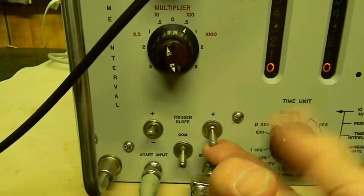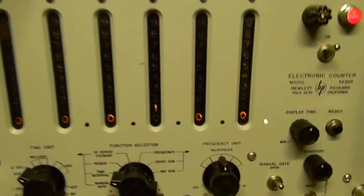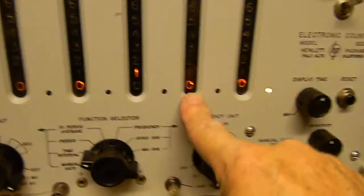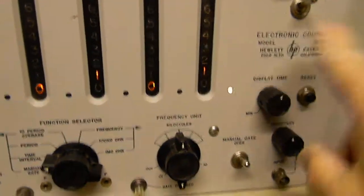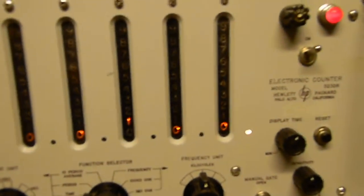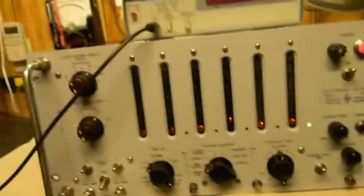Now if we trigger on the positive slope and then we trigger again on the positive slope, it goes to 100. So the reciprocal of 100 microseconds is our 10 kilohertz, because reciprocal of 100 microseconds is 10 kilohertz, and the reciprocal of 10 kilohertz of course is 100 microseconds.